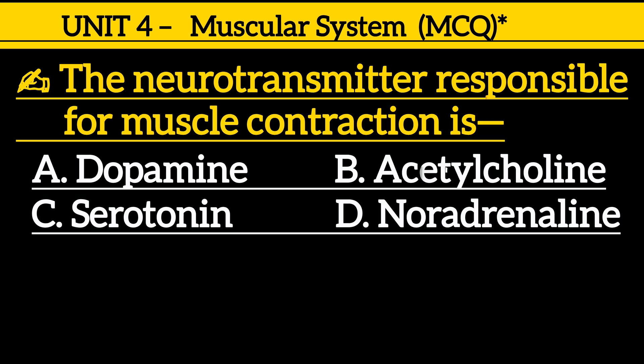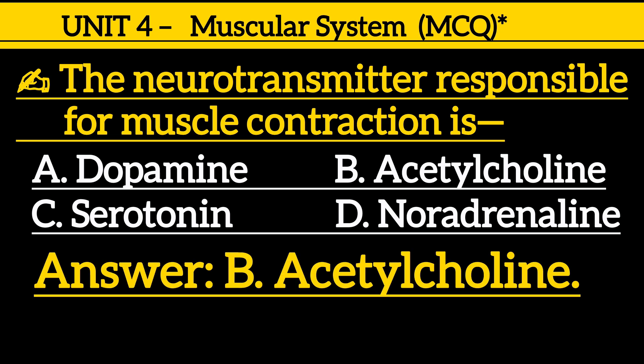Next one is: the neurotransmitter responsible for muscle contraction is — option A: dopamine, option B: acetylcholine, option C: serotonin, option D: noradrenaline. Correct answer is option B, acetylcholine.